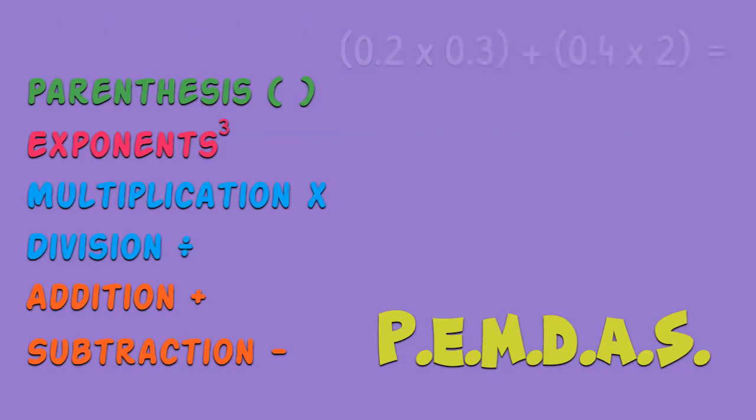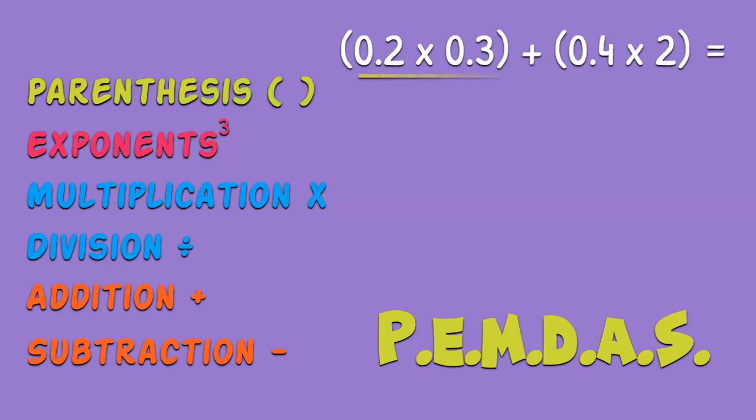So let's look at this one. 2 tenths times 3 tenths plus 4 tenths times 2. So we start with parenthesis and we've got two parts of the equation.